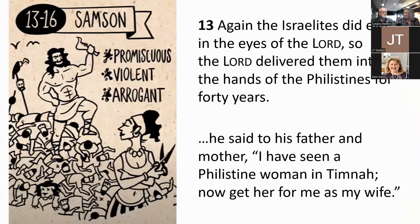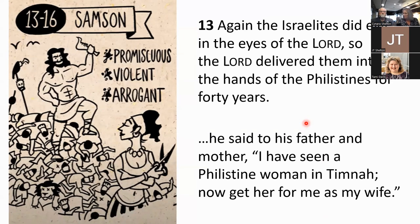Samson — the story many know as: long hair was the source of his strength, Delilah was bad, and obedience meant blessing. Chapter 13: the Israelites did evil again, so the Lord delivered them into the hands of the Philistines for 40 years. Samson is born, the spirit of God settles on him from an early age, but Samson is promiscuous, violent, and extremely arrogant.